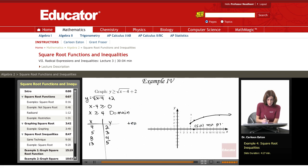Test point 5, 0 for y is greater than or equal to square root of x minus 4 plus 2. So when y is 0, let's see if this holds true. 5 minus 4 plus 2. So is 0 greater than the square root of 1 plus 2? Is 0 greater than or equal to 1 plus 2? Is 0 greater than or equal to 3? No, it is not.